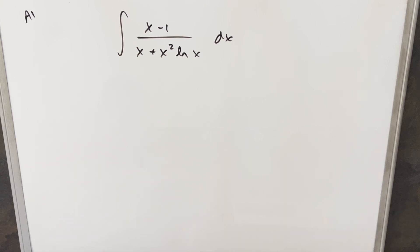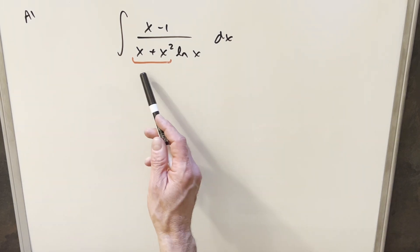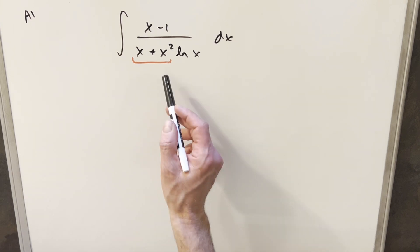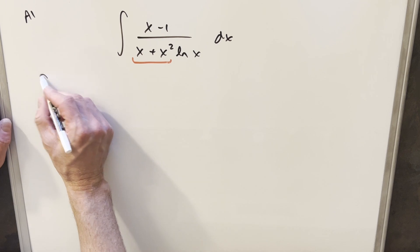The interesting thing I noticed here is when you have x plus x squared it makes me think we can factor out an x. Now when I did that and I factored out an x and divided into the numerator it didn't work that great. It was still kind of messy so I didn't really find a good way that way. But we could also factor out the x squared. So let's see what happens when we do that.